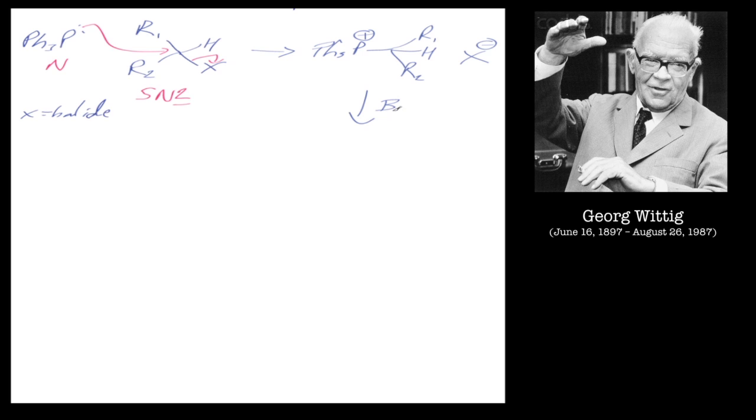And then we add a base. Typically you add butyl lithium at low temperature. You do it at low temperature because it's very reactive and you get butane as byproducts, and you want to keep that preferably in the liquid state and heated up slowly later on.